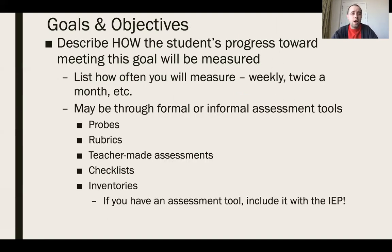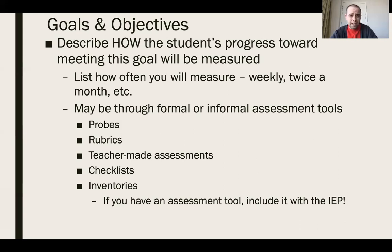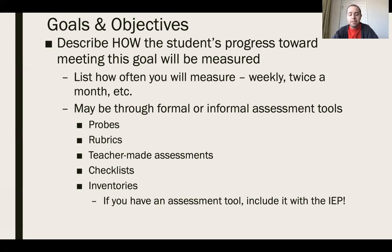In the goals and objectives section, describe how the student's progress toward the goal will be measured and how often. Weekly, twice a month — for behavior it might even be daily. Going more than a month between data points is not sufficient; if a student isn't meeting criteria and you're only checking every two months, there's not enough instructional time to make decisions. Stick to every other week, twice a month, or monthly. If you use a special rubric or checklist, include it with the IEP so anyone inheriting this student has the tools to progress monitor.